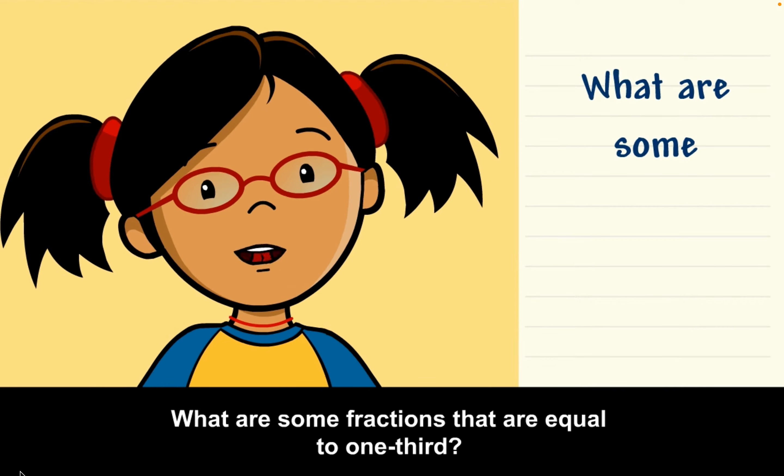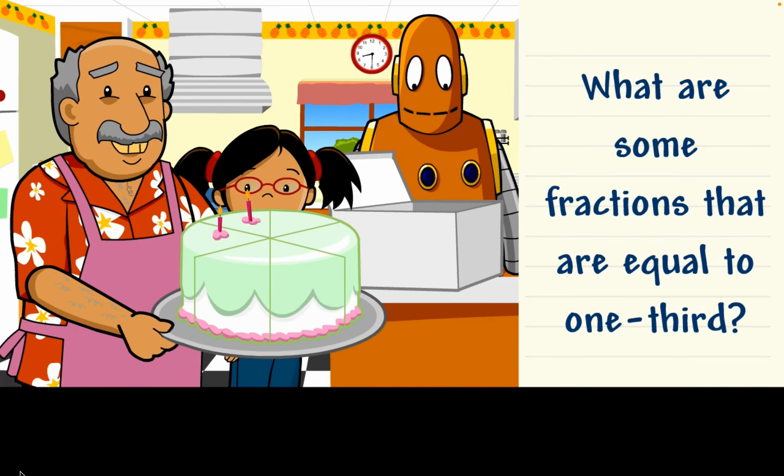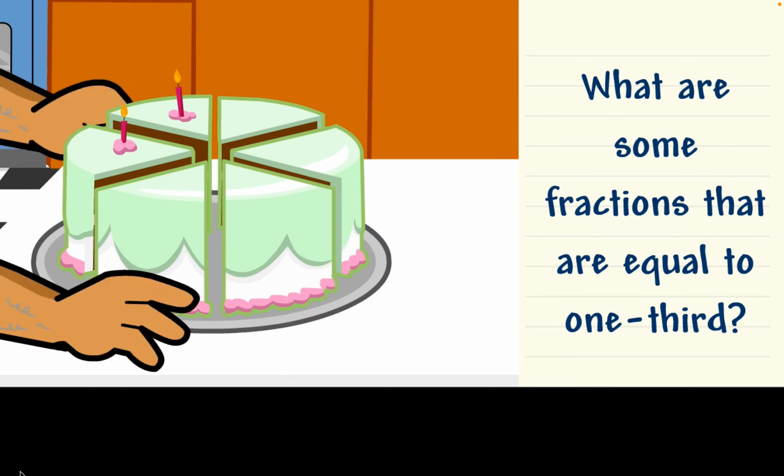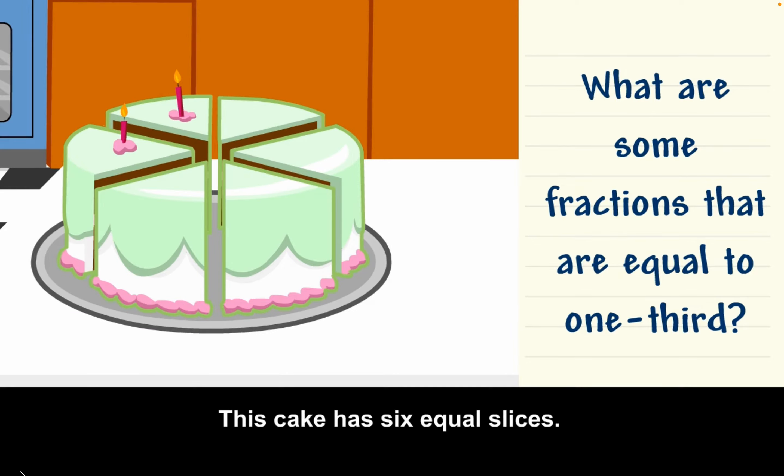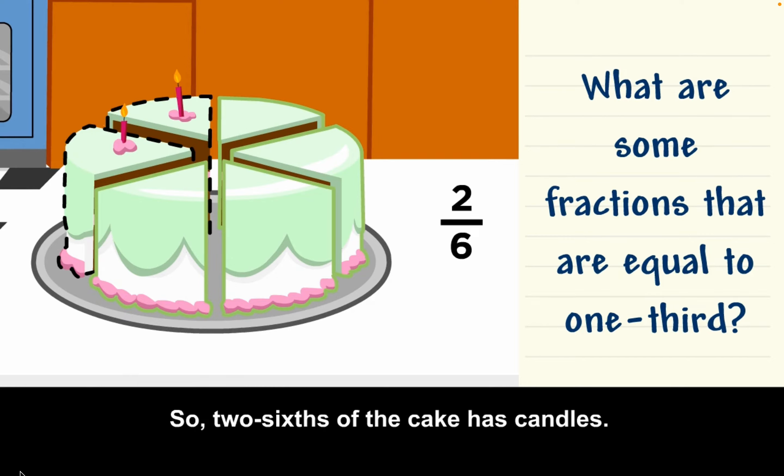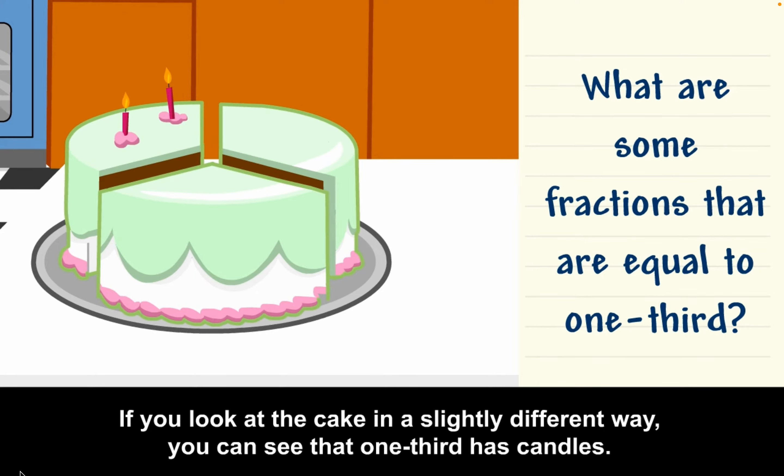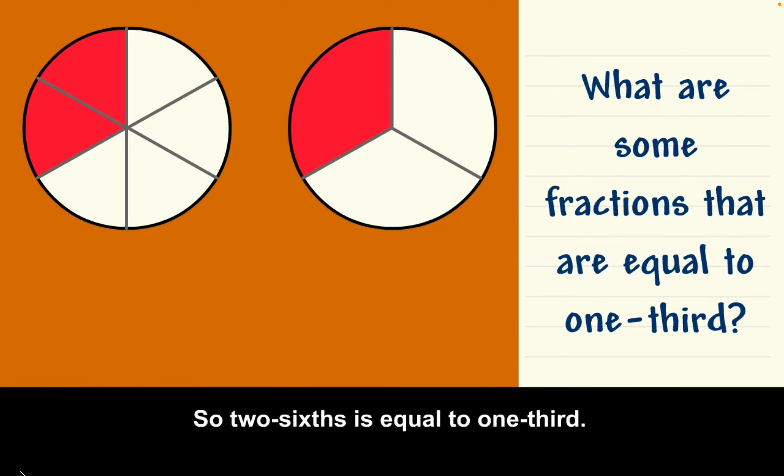What are some fractions that are equal to one-third? It's time for dessert. This cake has six equal slices. Two slices have candles. So, two-sixths of the cake has candles. If you look at the cake in a slightly different way, you can see that one-third has candles. So, two-sixths is equal to one-third.